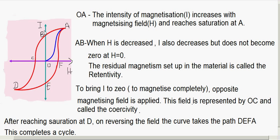The residual magnetism left in the material is called retentivity. This residual magnetism OB, which is left in the material when H is reduced to 0, is called retentivity. So we define retentivity as the value of intensity of magnetization of a material when the magnetizing field is reduced to 0.